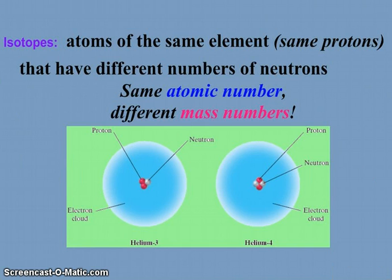An isotope is an atom of the same element, so they have the same protons, but they have a different number of neutrons. So they have the same atomic number, but a different mass number.